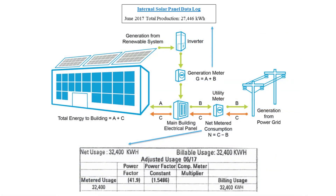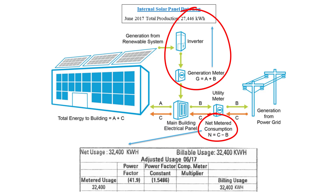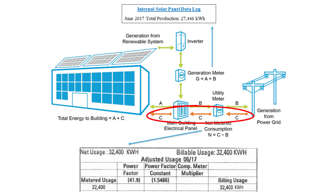Next, we will examine the scenario where the utility bill only provides net metered consumption, without any further breakdown as to the total energy sent from the grid to the property or sent from the property back to the grid. In this case, the only energy consumption values available are G, corresponding to the total on-site renewable energy generation, and N, corresponding to the net metered consumption, which is equivalent to C minus B. However, without any additional data points, you cannot use this information to calculate either the total grid electricity consumption or the amount of energy generated on-site and exported off-site.